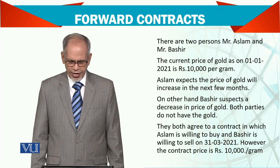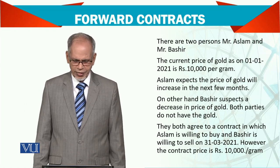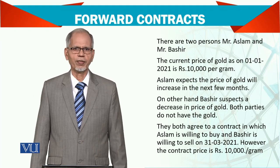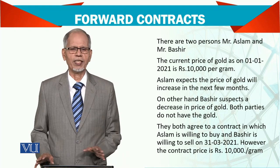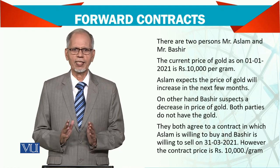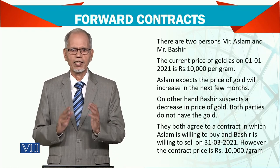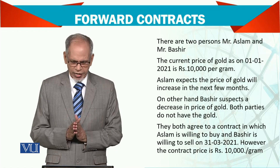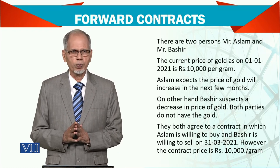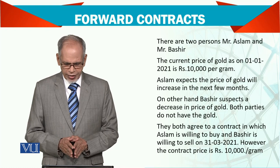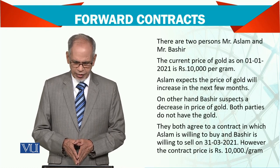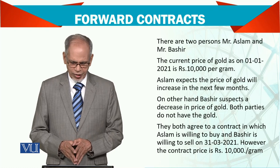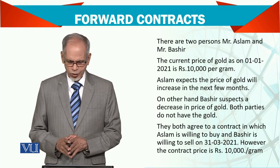On the other hand, Bashir suspects a decrease in the price of gold. Both parties agree that one is a buyer and one is a seller. The price is settled at 10,000 rupees per gram. They both agree to a contract in which Aslam is willing to buy and Bashir is willing to sell on 31st March 2021.